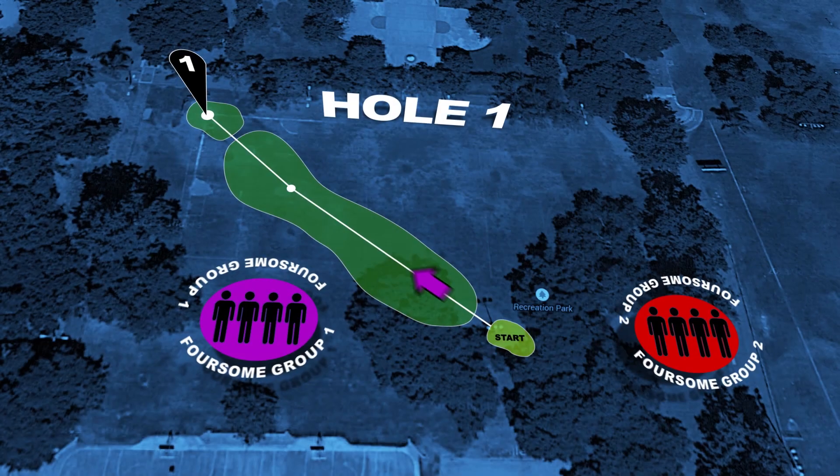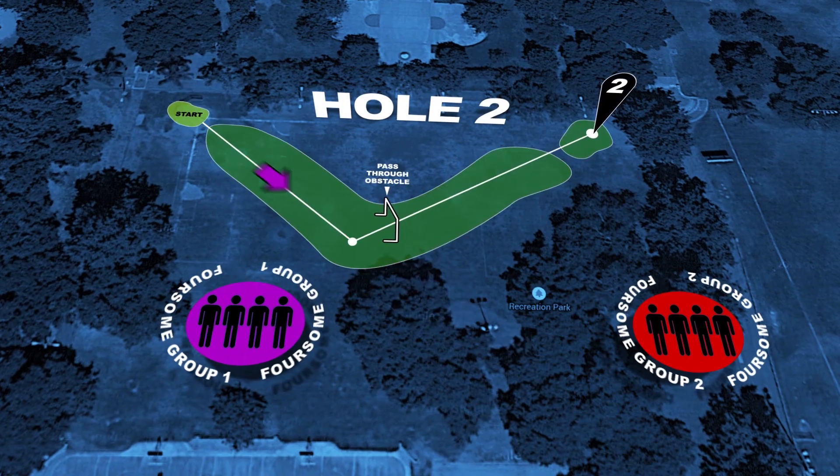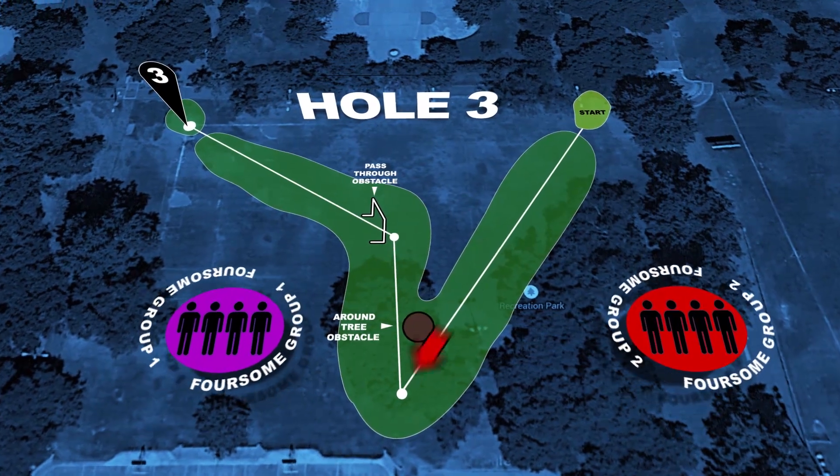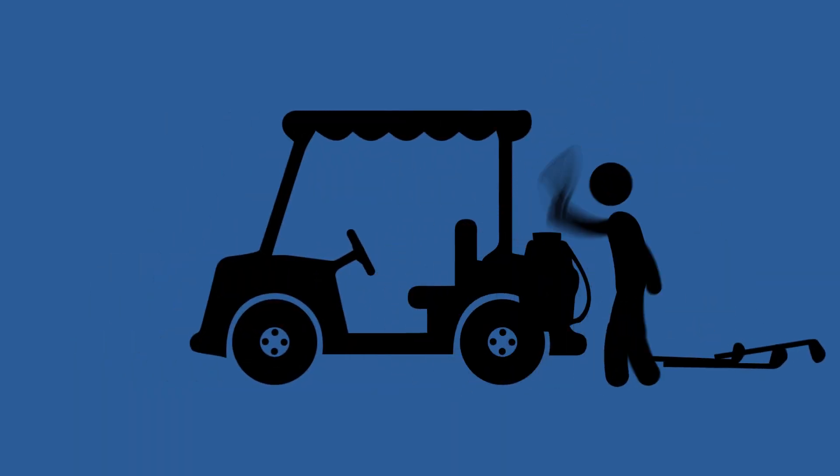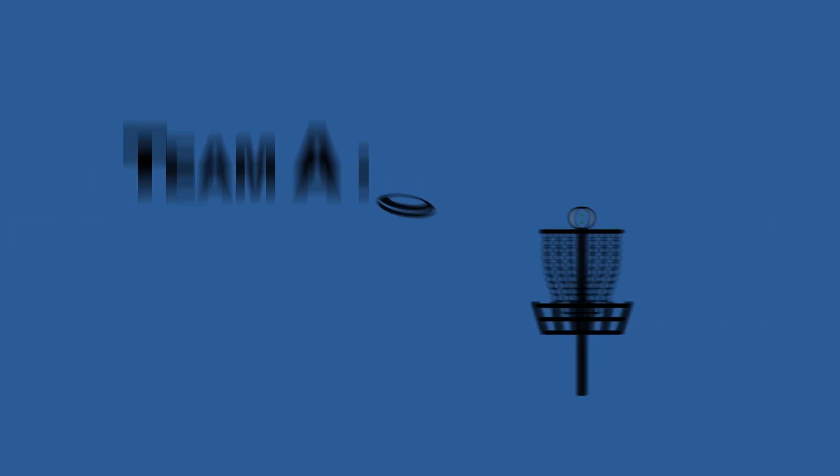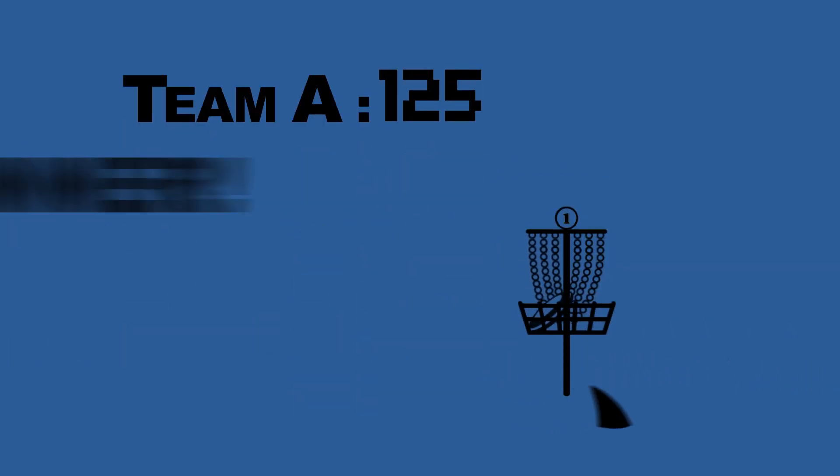Event number nine, disc golf. Each team has two players that are part of two foursomes. The foursomes play a four-hole course. Unlike real golf, the team with the most total points after both foursomes have played wins.